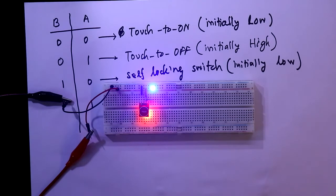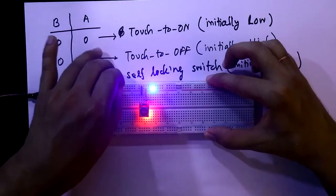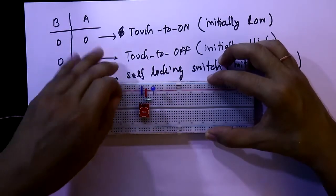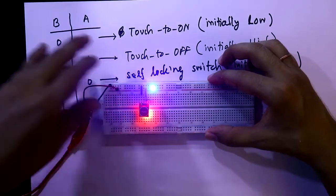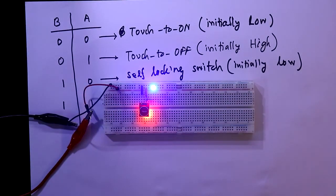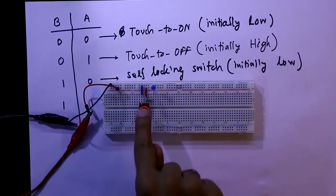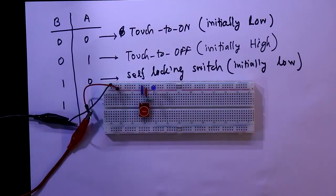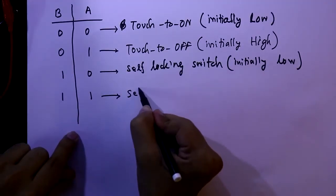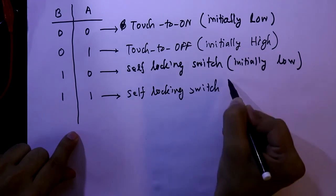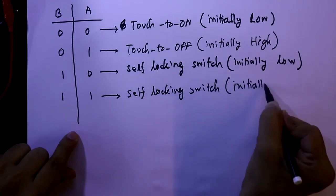This time both A and B. This one also working as self-locking switch. Now see the initial condition. Now if I connect the power, the initial condition is high. The initial condition is high. This one is also working as self-locking but it is initially high.